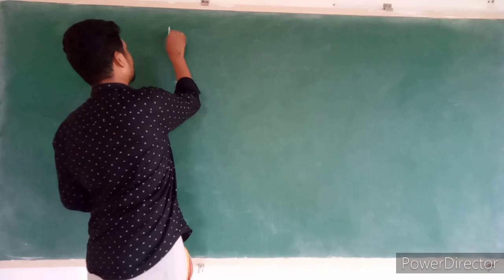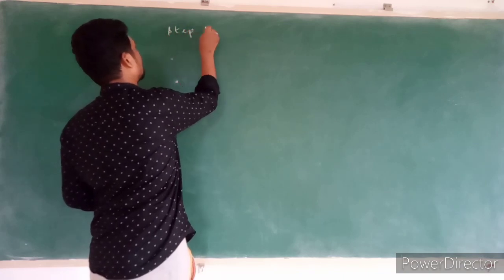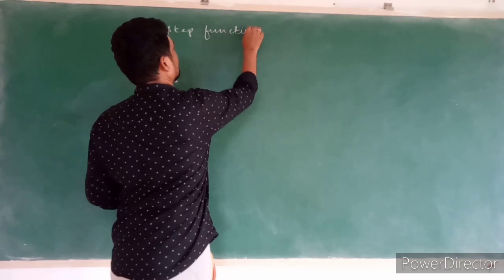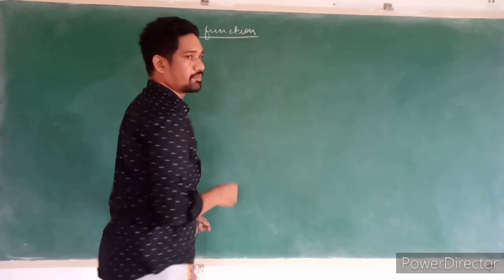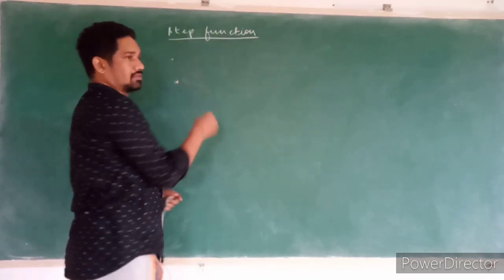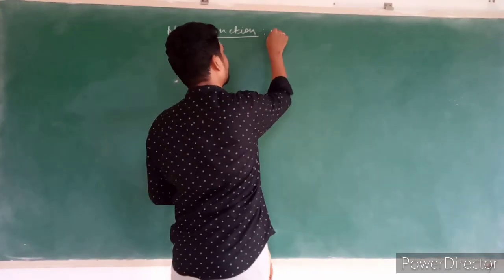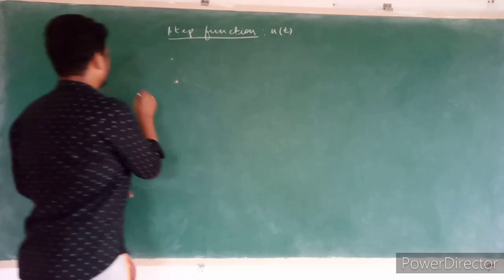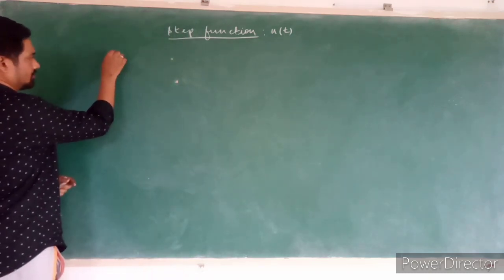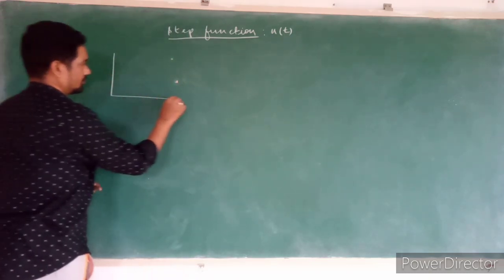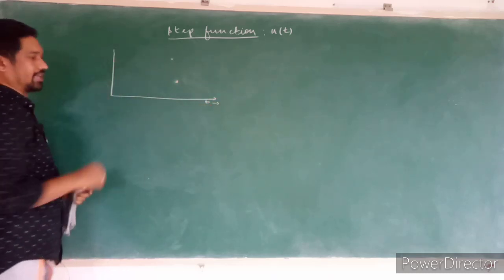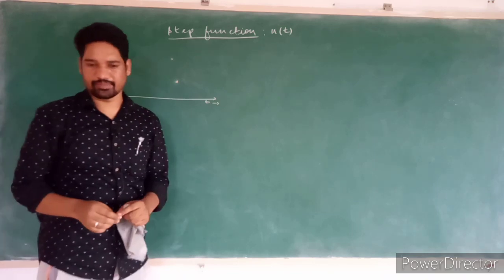For example, a step function - this is how the representation. It is represented as u(t), step function, and this is like t on the x-axis and its amplitude on the y-axis. So what do I mean by the amplitude?